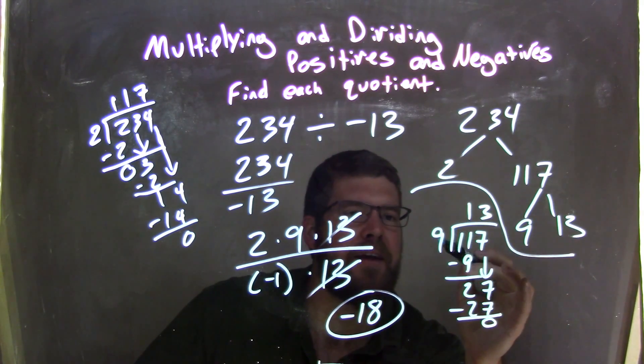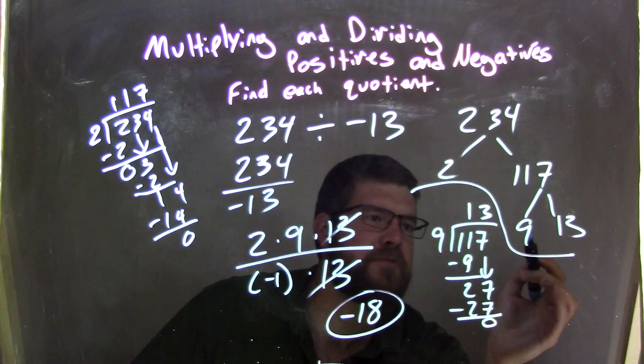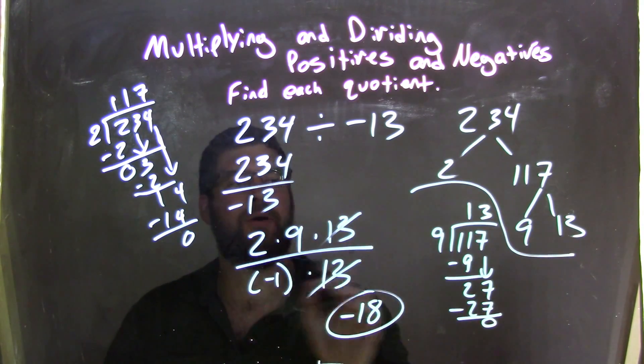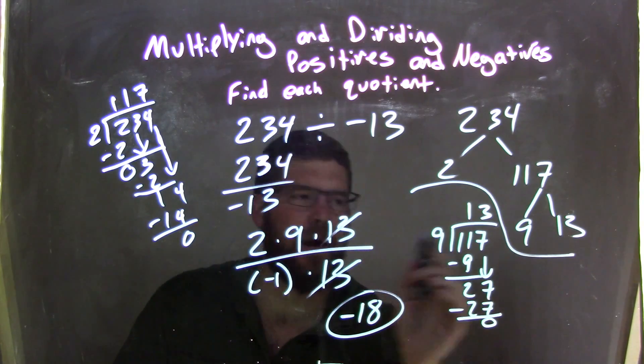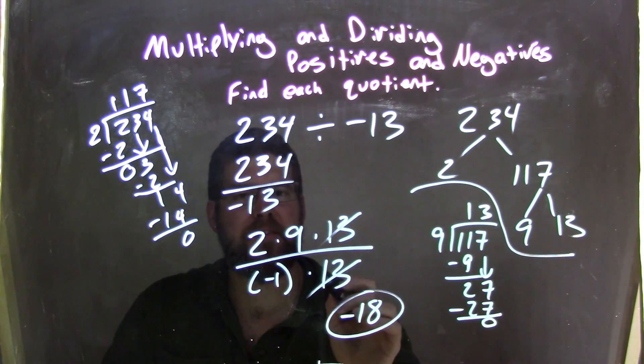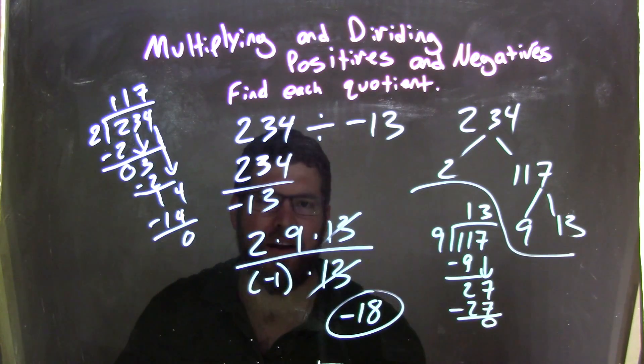9 went in evenly. 9 goes into 11 one time, 9 down here, 11 minus 9 is 2. Bring down the 7. Now we have 27, 9 goes into 27 three times. 3 times 9 is 27, subtract them, 0, we're good, 13. So 9 times 13 is 117, times 2 is 234. That's our factorization of the top. Now, 9 is not prime, but it's okay. So now we cancel out the 13s, because the denominator is negative 1 and 13. So now we're left with 2 times 9, which is 18, divided by negative 1, which is negative 18, our final answer.